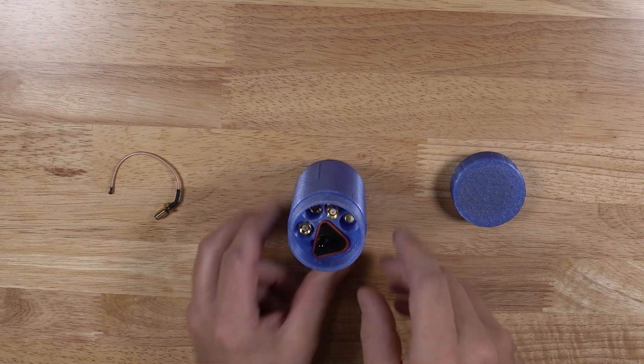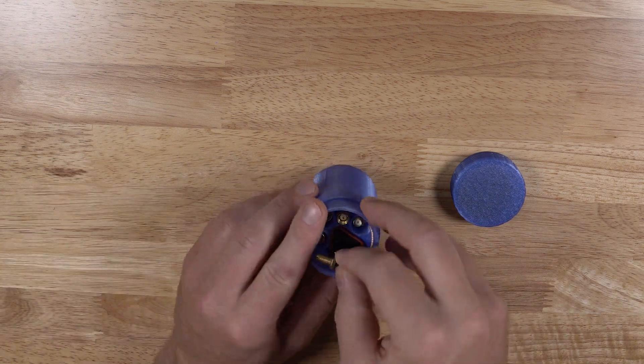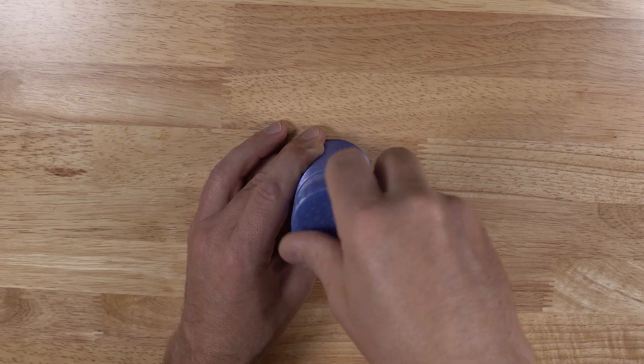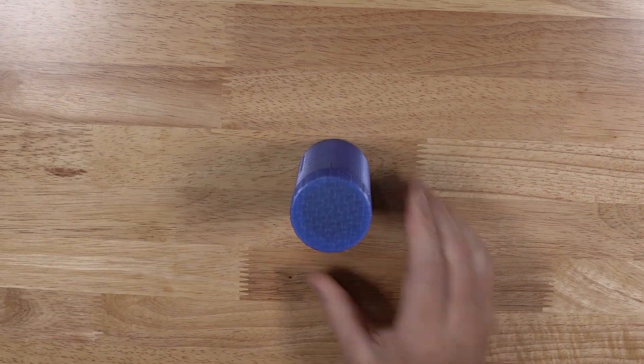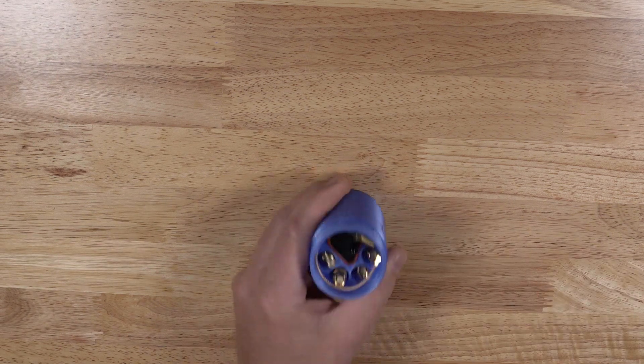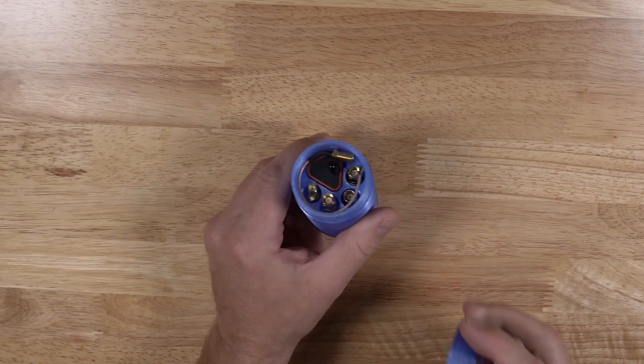And then another one here at the top, just because one's SMA, one's RP-SMA. There you go, it's all contained, one big mess. And every time you open it up, you're not sifting through the parts. They're in there nice and secure.